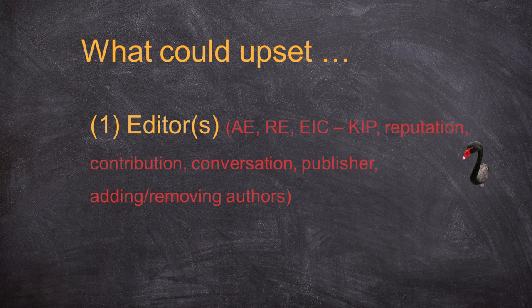So first of all, what could upset the editor? This is the editor of the journal normally, and it could apply to any discipline. There are many types and many roles of editor, and this is something we should learn before we submit a paper to any journal. There is an editor-in-chief who makes the final or overall decision of the journal. Then there is an AE, which stands for associate editor. Most journals will have an AE or more than one AE to look after a specific area or aspect.